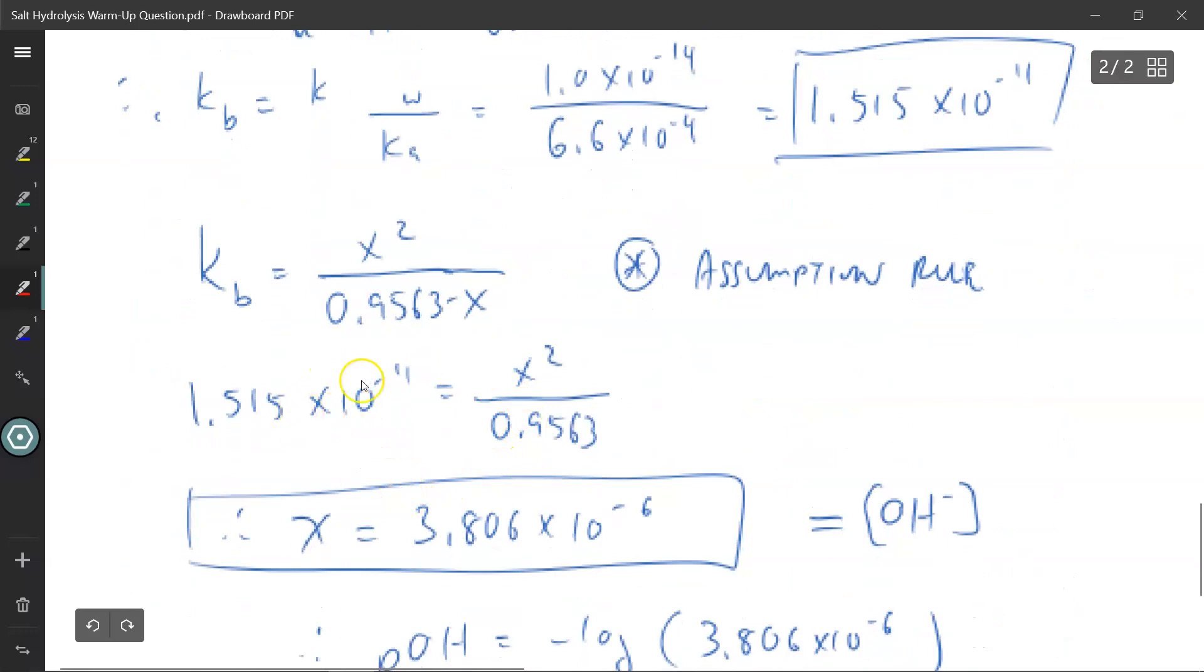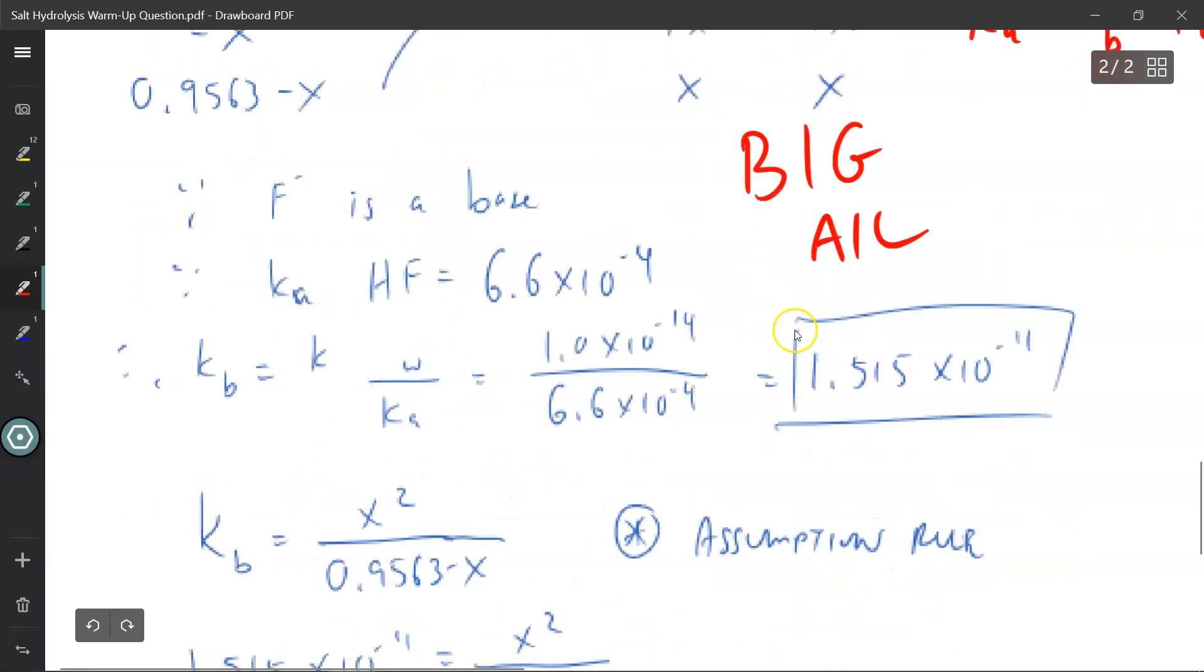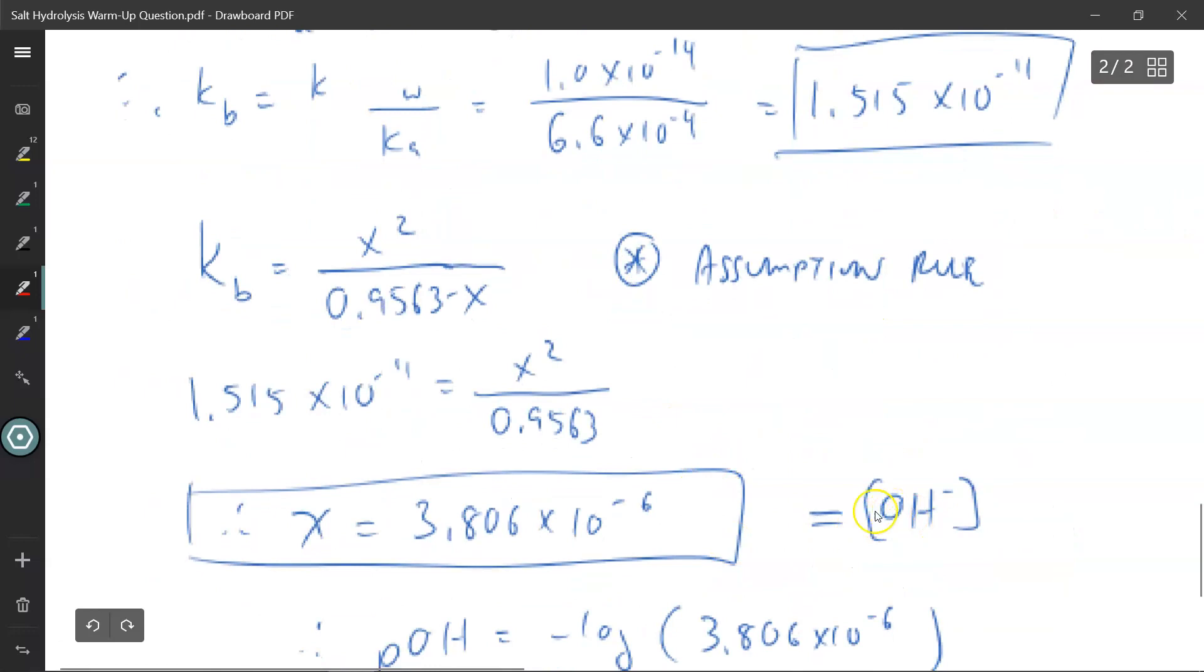From there, I can just get rid of the x if it's negligible. So it becomes x squared divided by 0.9563. Solve for x, and you get 3.806 times 10 to power negative 6. And of course, x is the concentration of my hydroxide ion.